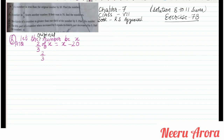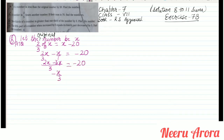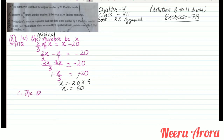So 2/3 x, separating variables and constants, we have minus 20 on one side. Taking LCM as 3: 2x minus 3x equals minus 20, so minus x by 3 equals minus 20. The minuses cancel, so x equals 20 times 3, which gives x equals 60. Therefore the original number is 60.